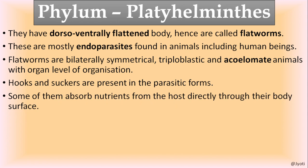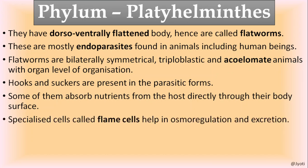Since most of them are endoparasites, they have structures like hooks and suckers with which they cling to body parts of the host. Some members absorb nutrients from the host directly through their body surface. They have a specialized cell called the flame cell, which helps in osmoregulation — that is, electrolyte and water balance — and excretion, which is the removal of nitrogenous waste.